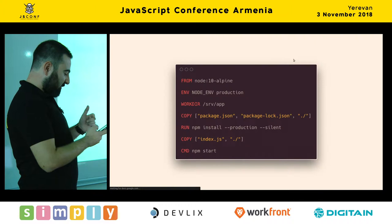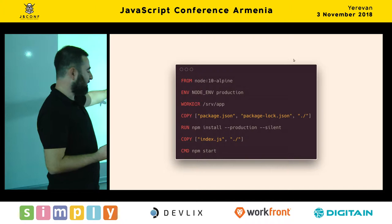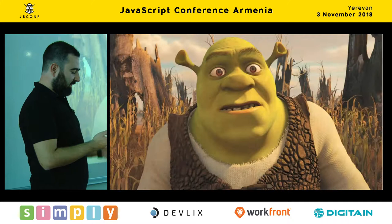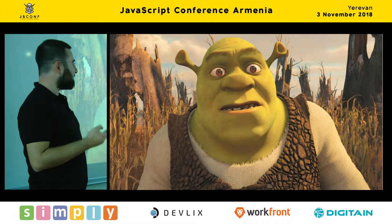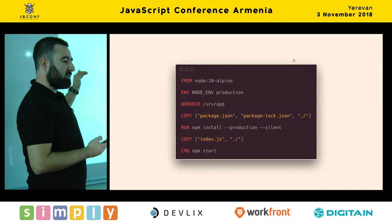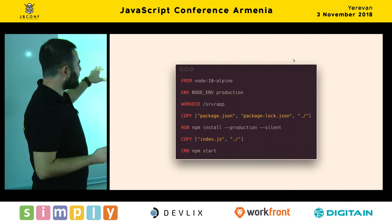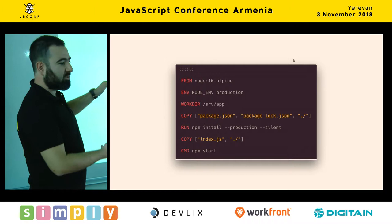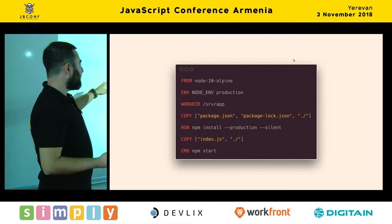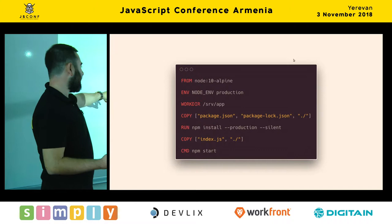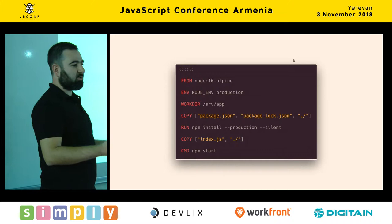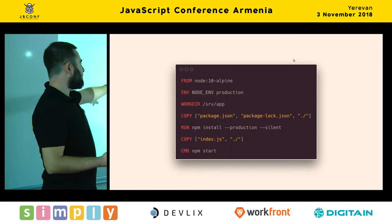One thing you might notice is there are two copy operations: one for package.json and one for index.js. The reason is Docker layer caching. Docker caches every single layer it creates. So if package.json and package-lock.json haven't changed, it's not going to run NPM install again. It carries on from where you changed index.js. Whenever you change your source code, you don't want to reinstall everything. But if you change something in package.json, it rebuilds from that layer. When you create a Dockerfile, you have to pay attention to the instruction sequence.